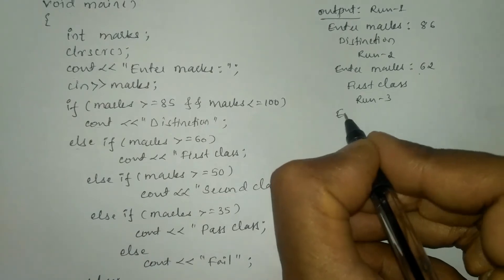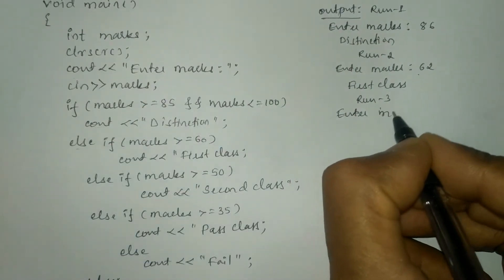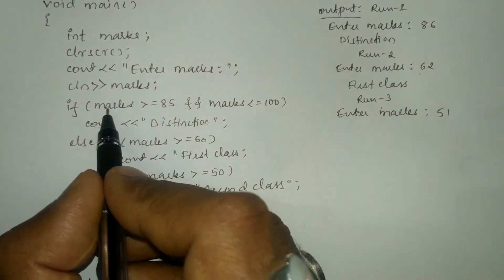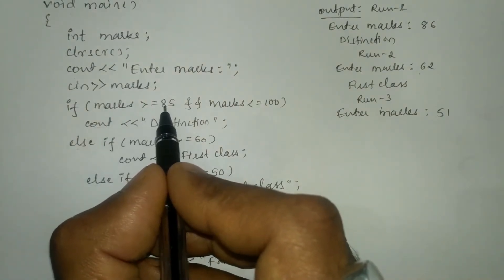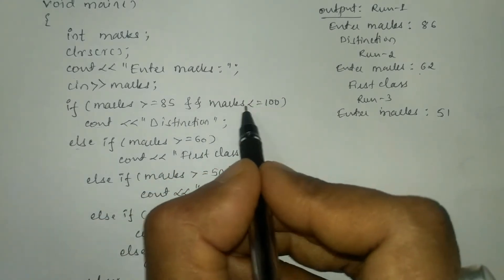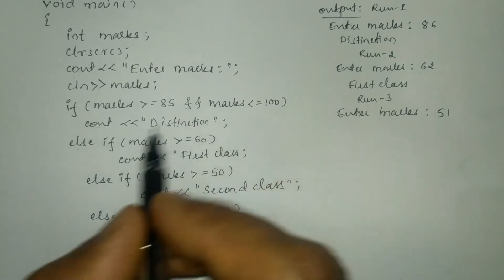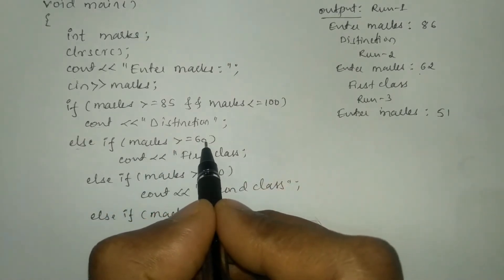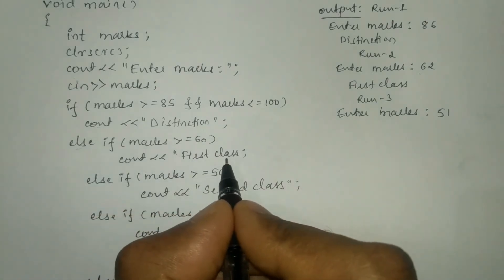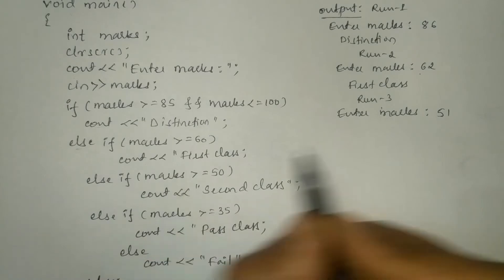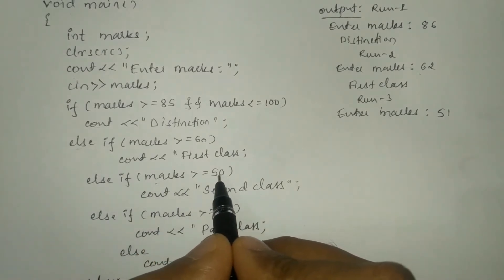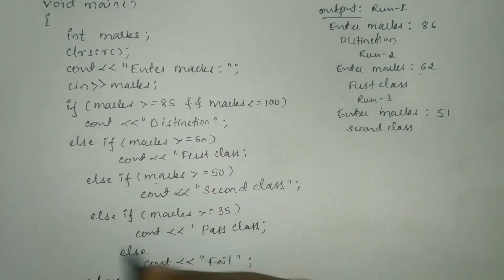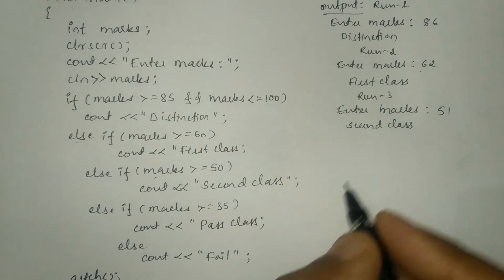Run 3: once again it asks the user to enter marks. I am going to enter 51. We check: 51 is greater than or equal to 85 — no, condition fails. 51 is less than or equal to 100 — true. False AND true is false, so this statement will not execute. Next: 51 is greater than or equal to 60 — no, condition fails, so first class will not print. Else if: 51 is greater than or equal to 50 — yes, it is true — so it is going to print 'second class' and comes out of the if-else selection statement.